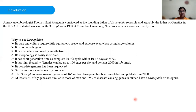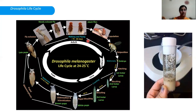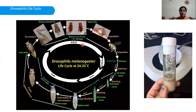Let's understand the life cycle of Drosophila. Being a holometabolous dipteran insect, it has distinct stages of development: egg, larva, pupa, and adult. The duration of these stages varies with temperature. At 25 degrees Celsius, the adult emerges within 10 days, but at 20 degrees Celsius or lower, it requires about 15 to 16 days.